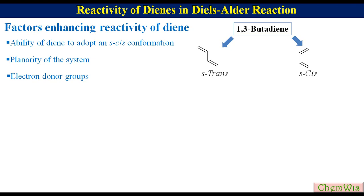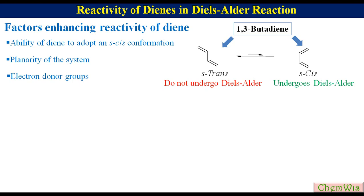S-trans means the two double bonds are trans with reference to the single bond, and S-cis means the two double bonds are cis with reference to the single bond. S-trans is more stable than S-cis because of less steric hindrance. S-cis undergoes Diels-Alder reaction while S-trans does not, so any factor that favors S-cis conformation increases the reactivity of the diene, while any factor that favors S-trans decreases it.